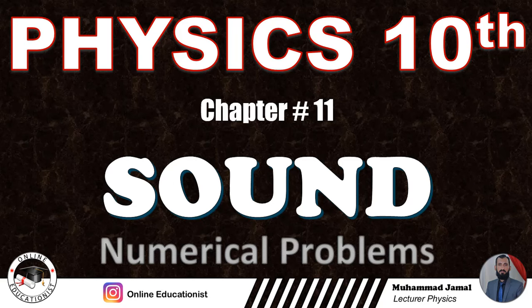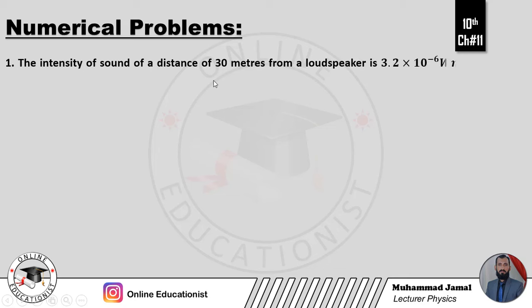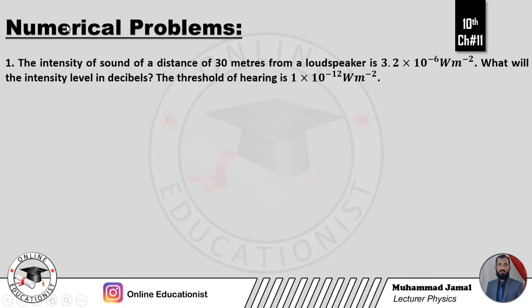10th class Chapter 11 Sound ke numerical problems solve karenge. First problem: the intensity of sound at a distance of 30 meters from a loudspeaker is 3.2 into 10 power minus 6 watt per square meter. Intensity level in decibels find karni hai. Threshold of hearing I naught given hai: 1 into 10 power minus 12 watt per square meter.